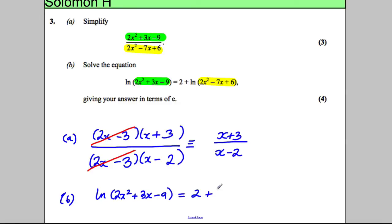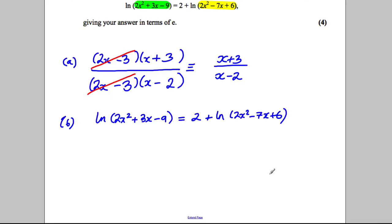Now if I subtract this from both sides, if I have ln(2x² + 3x - 9) subtract ln(2x² - 7x + 6) equals 2, I've just subtracted this term from both sides. Now the reason I've done that is because I know my log laws.